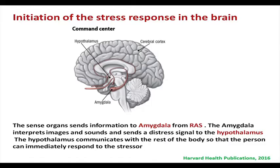When the stress response is initiated in the brain, the sense organs send information to the amygdala from the reticular activating system — a part we covered in the previous section. The amygdala interprets these images and sounds, evokes an emotional response, and sends a distress signal to the hypothalamus. The hypothalamus then communicates with the rest of the body so that the individual can respond immediately to the stressor.